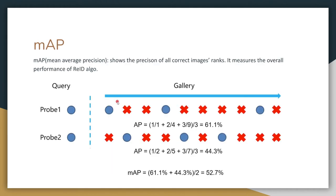We also have mAP, which shows the precision of all correct image ranks. It measures the overall performance of re-ID algorithms. For example, in these two queries, both return 3 true positives. But because of the rank difference, the first one has AP equal to 61.1%, and the second one has AP equal to 44.3%. So if we can rank the true positives higher, then the model is considered better.